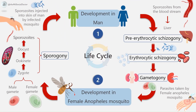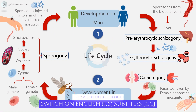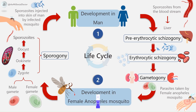Plasmodium species passes its life cycle in two hosts. The definitive host is the female Anopheles mosquito, whereas the intermediate host is man. The life cycle of the malarial parasite comprises two stages: an asexual phase occurring in humans, which acts as the intermediate host, and a sexual phase occurring in the mosquito, which serves as the definitive host for the parasite.